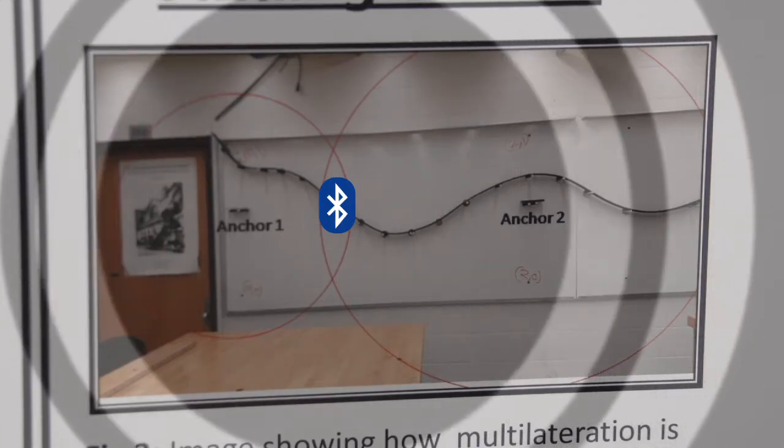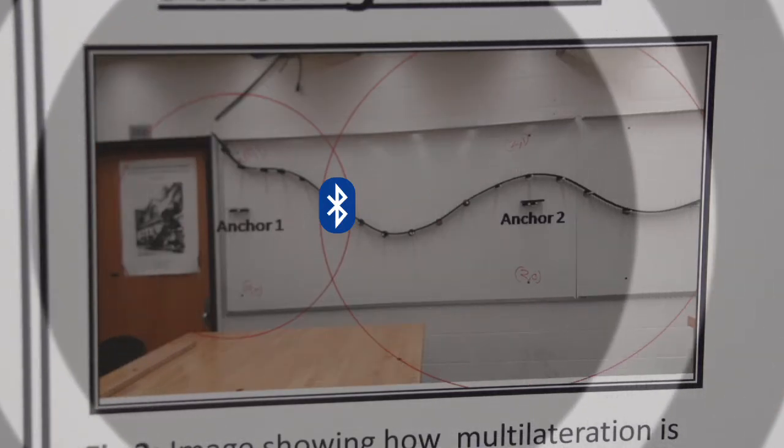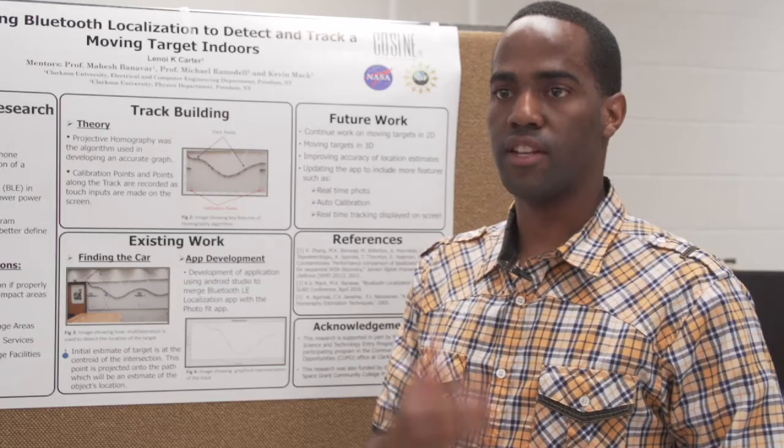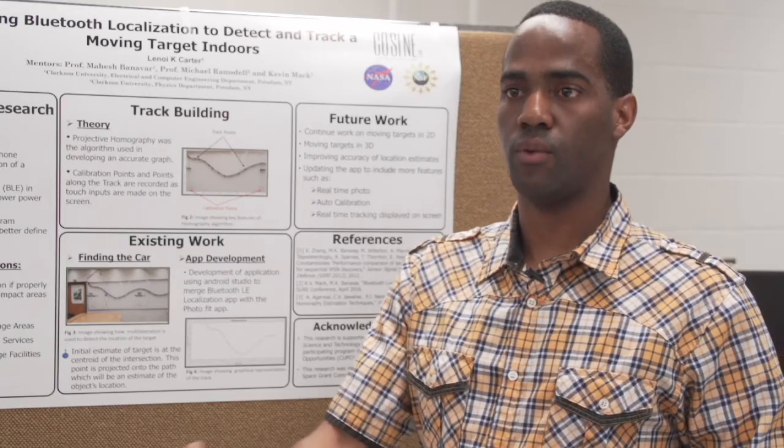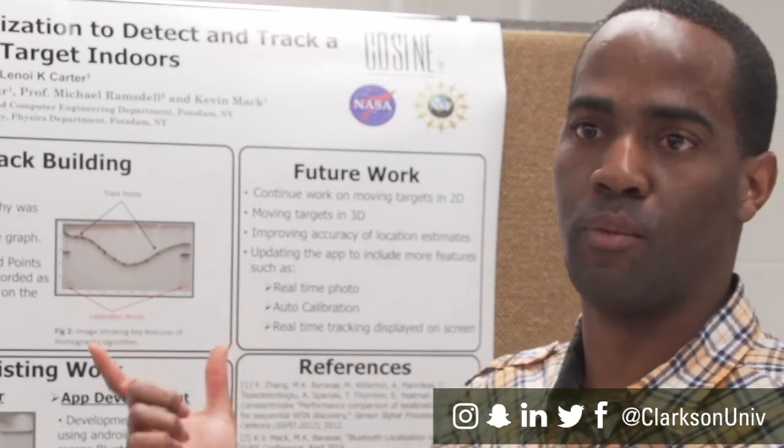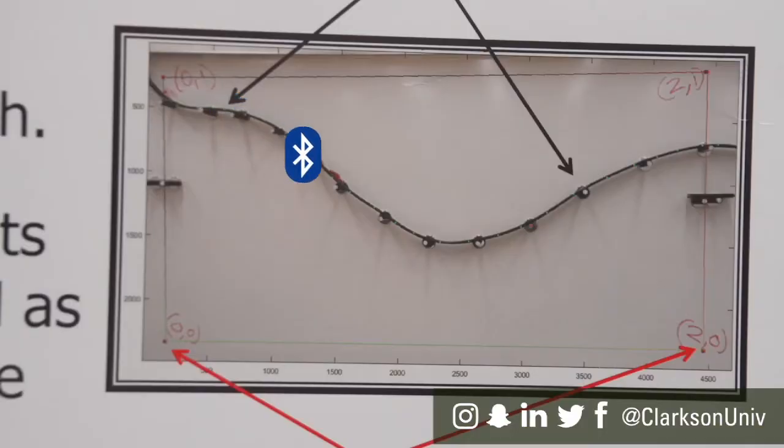Key problems that we realized is that Bluetooth Low Energy is not linear. It doesn't decrease linearly with distance. That's where we're stuck on this portion of the problem. We want to see the cart moving in real time.